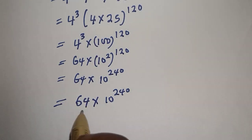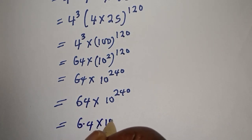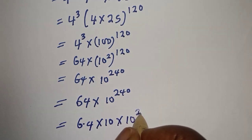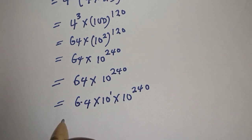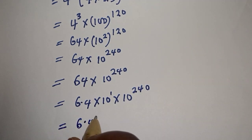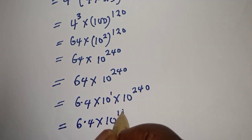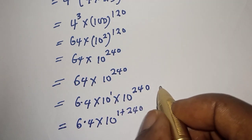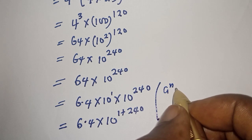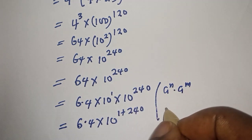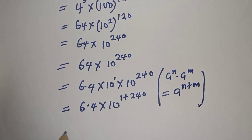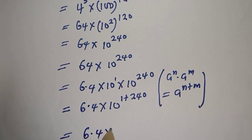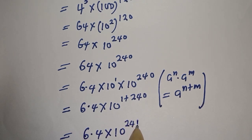This can be written as 6.4 multiplied by 10, multiplied by 10 raised to power 240 — since 64 = 6.4 × 10, that 10 is raised to the power of 1. Using the rule a^n × a^m = a^(n+m), we get 6.4 times 10 raised to power 1 plus 240, which equals 241. Therefore, the final answer is 6.4 × 10^241.